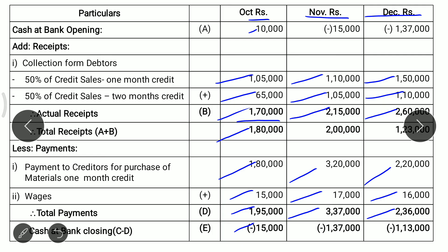This negative Rs. 15,000 is the opening balance for November. Actual receipts of November are Rs. 2,15,000. Subtracting the opening deficit gives total available receipts of Rs. 2,00,000. Total payments for November are Rs. 3,37,000. Rs. 3,37,000 minus Rs. 2,00,000 gives a negative balance of Rs. 1,37,000 for the month of November.